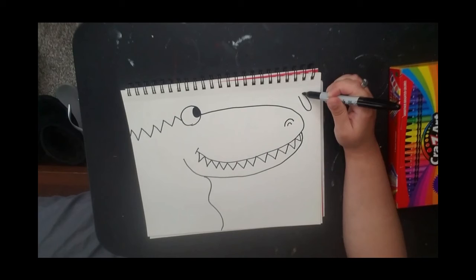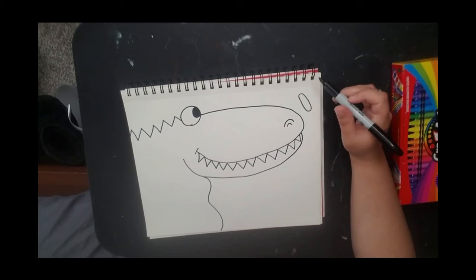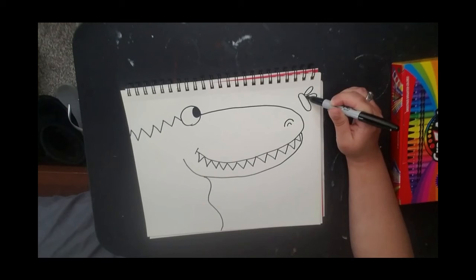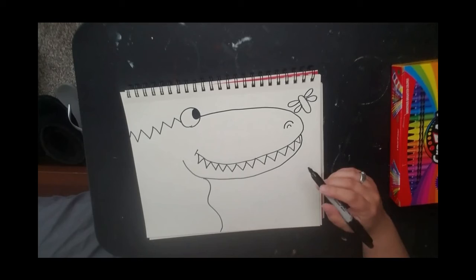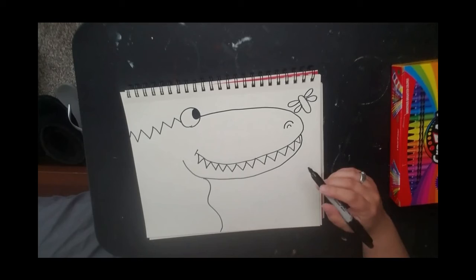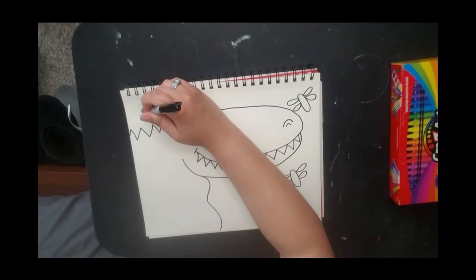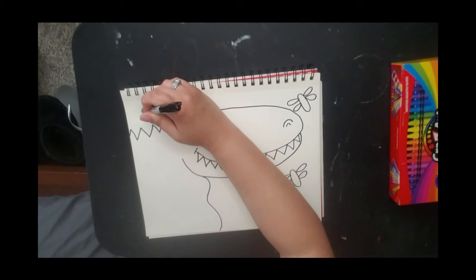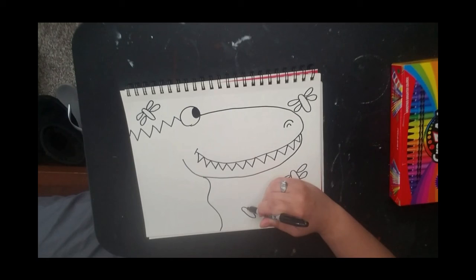Then we're going to do two ovals on the side for the wings and then two more ovals on the other side for the other two wings. Now we have one fly in the sky. Now you can put these flies wherever you'd like. Lord knows they fly everywhere anyway so there's no wrong place to put your buggies. I'm going to put one more down here.